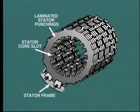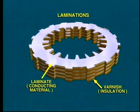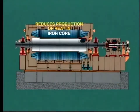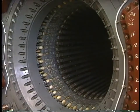The slots run end to end. The iron core is made up of laminations of special steel. Each individual lamination or plate is coated on one side with an insulating material, the objective of which is to reduce the flow of induced eddy currents in the core. This in turn reduces the production of heat in the iron core and thus keeps its temperature down. The laminations are tightly packed together and secured within the stator frame.